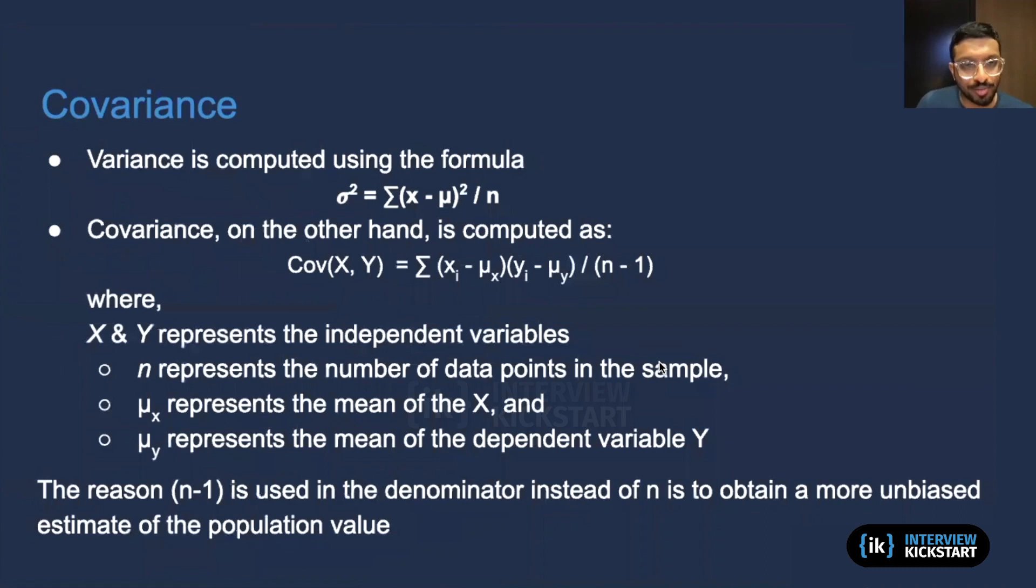So over here, this actually gets into the calculation of covariance itself. So far, we've been talking about positive, negative values of covariance, but now we want to get into the real deal of how do we actually calculate this? So we have a formula for variance. That's pretty well known. σ² is equal to the sum of (x - μ)² divided by n, where n is the number of samples. So this is our kind of population variance.